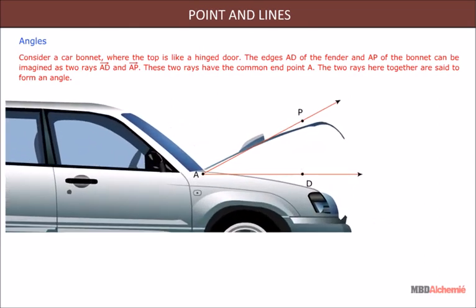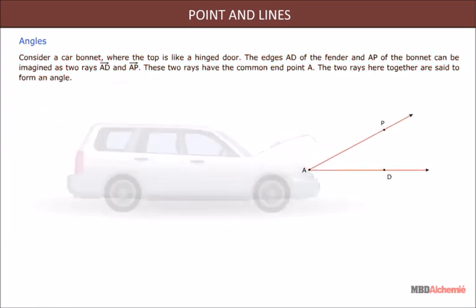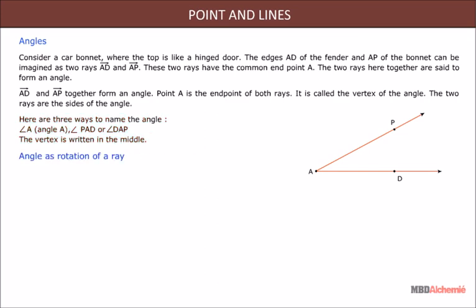Consider a car bonnet where the top is like a hinge door. The edges AD of the fender and AP of the bonnet can be imagined as two rays AD and AP. These two rays have the common endpoint A and together are said to form an angle. Point A is the endpoint of both rays and is called the vertex of the angle. The two rays are the sides of the angle. Here are three ways to name an angle: angle A, angle PAD, or angle DAP. The vertex is written in the middle.